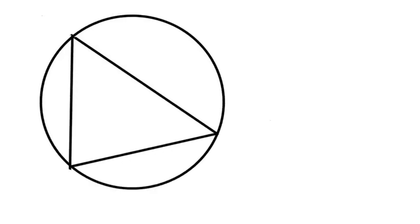We are given a triangle inside a circle. The sides of the triangle are 13, 14, and 15, and we are to find the radius of the circle.